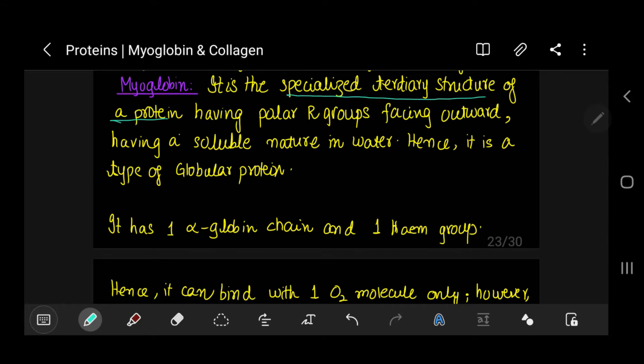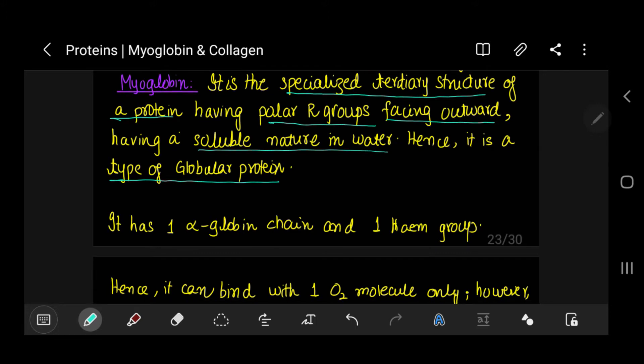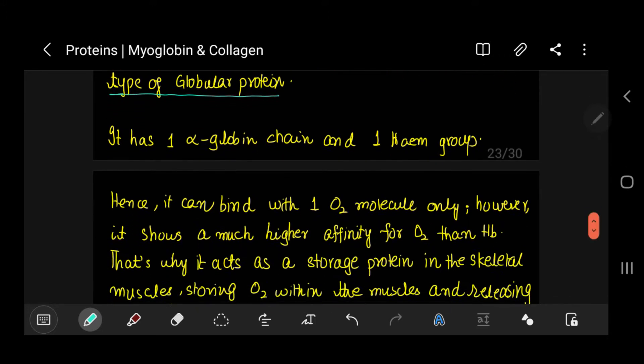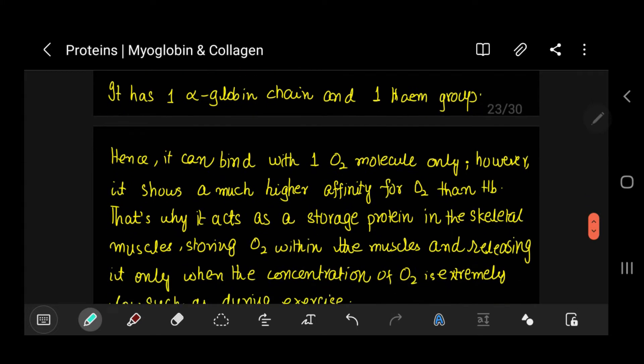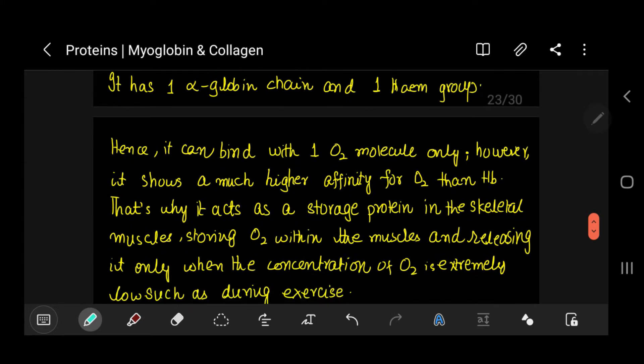Myoglobin is the specialized tertiary structure of a protein having polar R groups facing outward, having a soluble nature in water. Hence it is a type of globular protein. Since water is also polar and it has polar R groups facing outward, polar-polar attract, hence it's soluble in water.